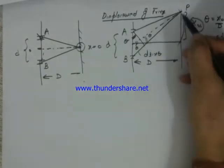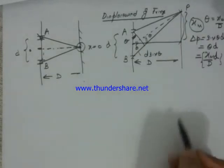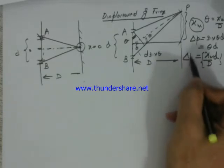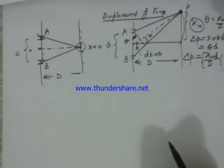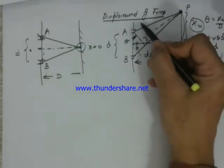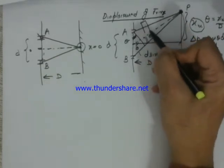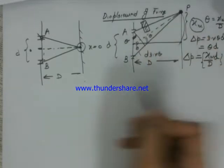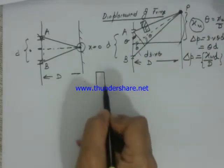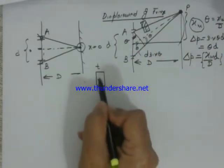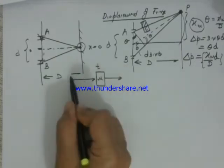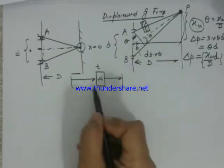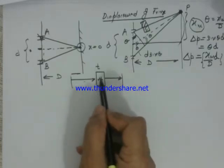This distance is xm, we can write it as x also, it is just a matter of nomenclature. So delta p is the path difference for this point. Now suppose we place a slab in the path of AP and the slab has thickness of t and refractive index as mu.